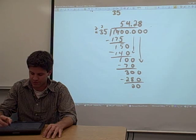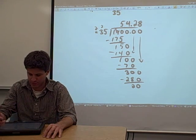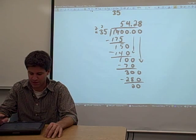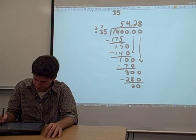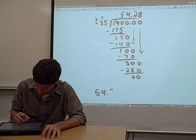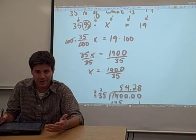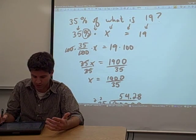So technically, if we wanted to go more decimal places, we could. We could add 0s until the cows come home, I suppose. But I'm just going to cut this thing off. I'm going to round this thing. I'm going to say the answer is 54.3. I'm going to round up to 2.